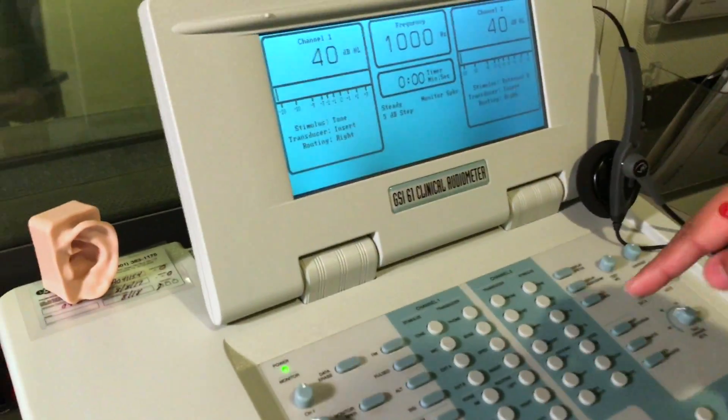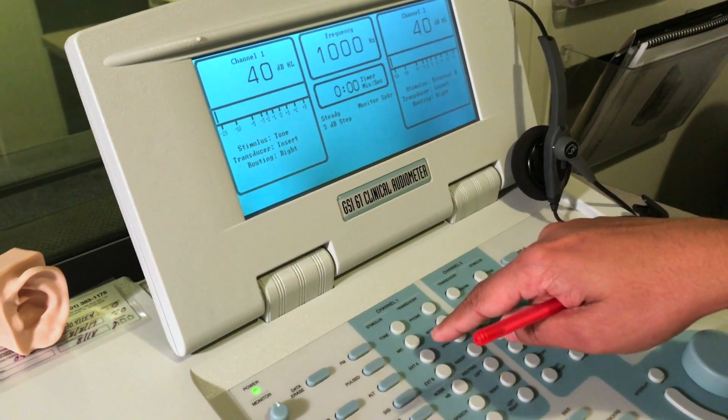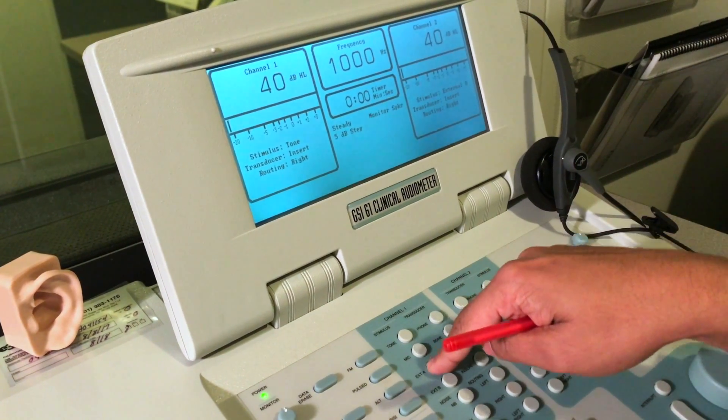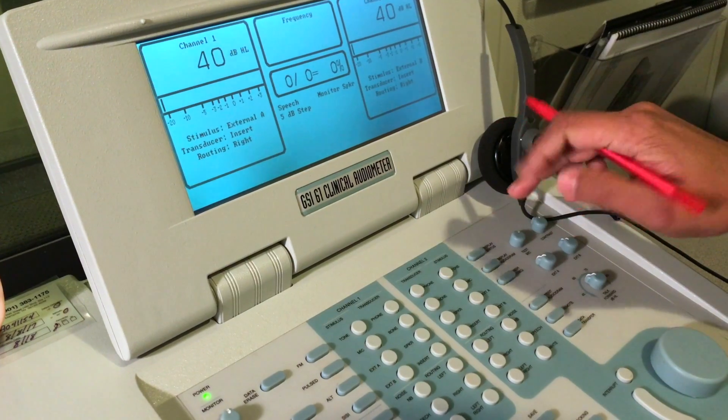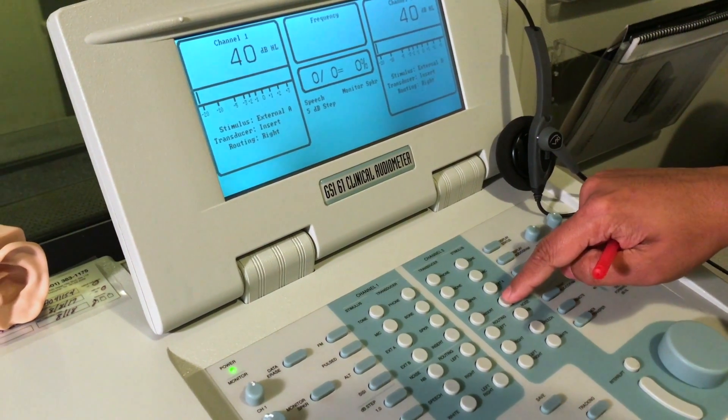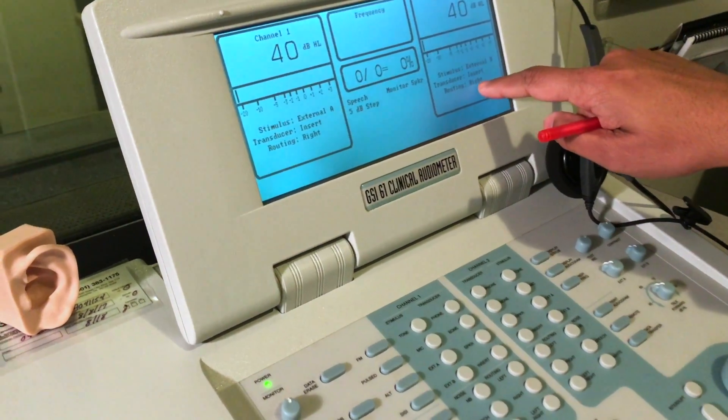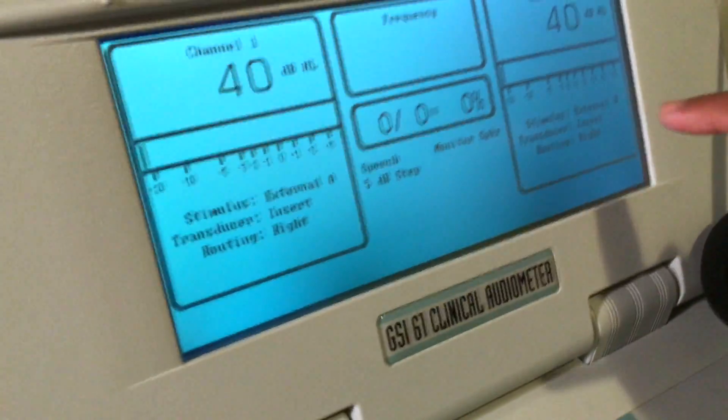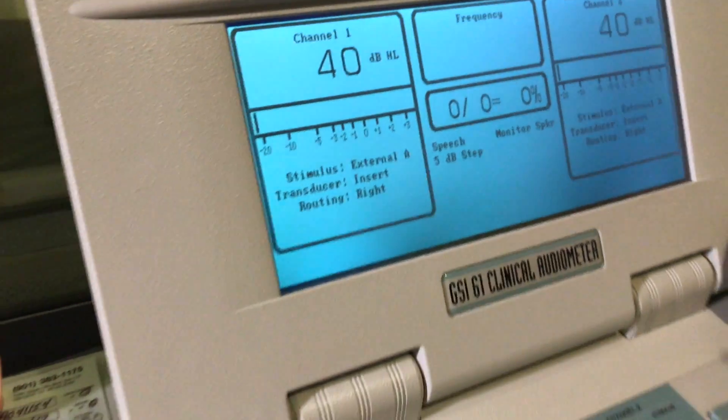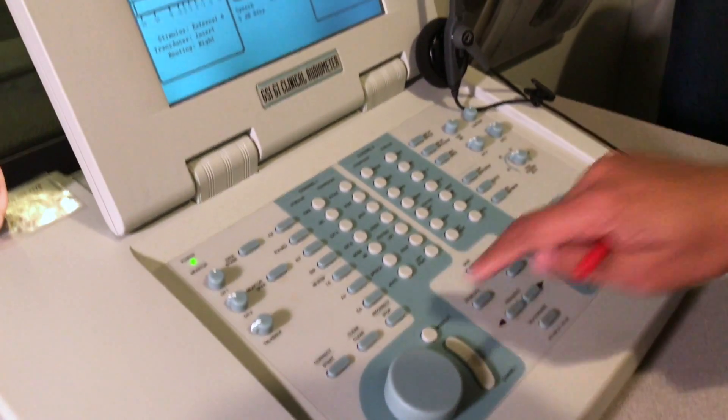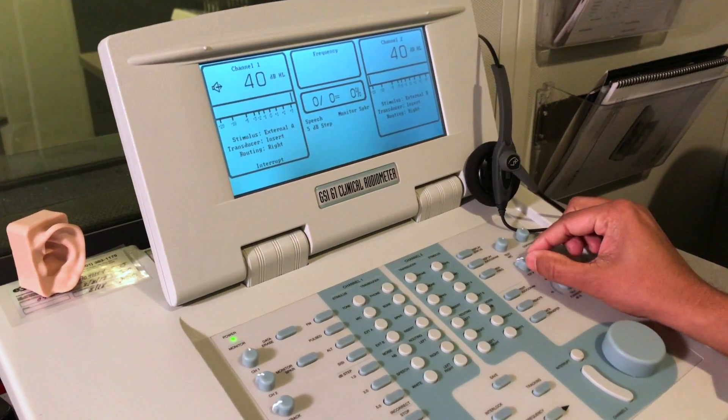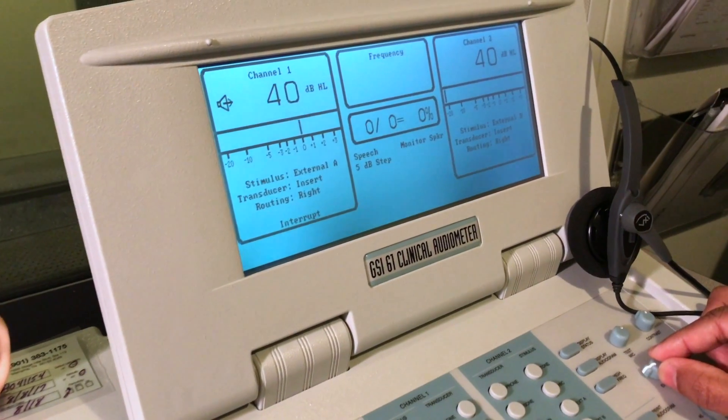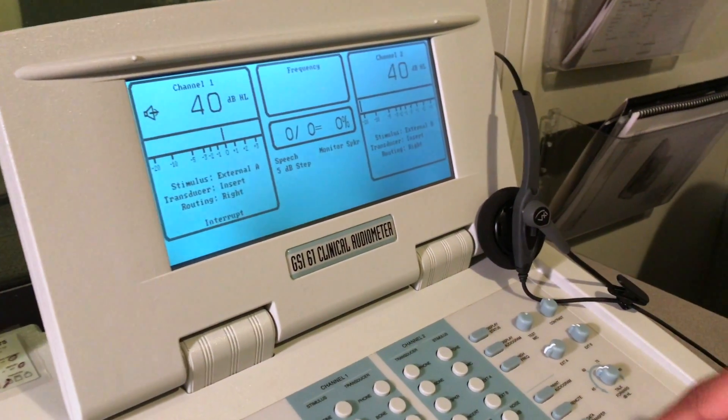Use that to set the VU meter to zero. On channel 1, select external A insert for the right ear. We're measuring the threshold in the right ear. On channel 2, select external B insert, and make sure you select the same ear. Both the noise and the tone should be presented to the right ear. Press interrupt to make sure it's playing a tone, and then adjust the VU meter so that it is zero. Repeat the same for channel 2.